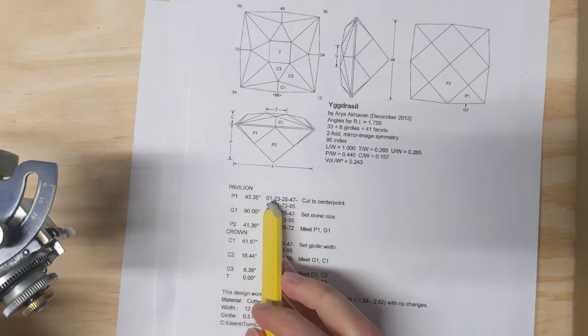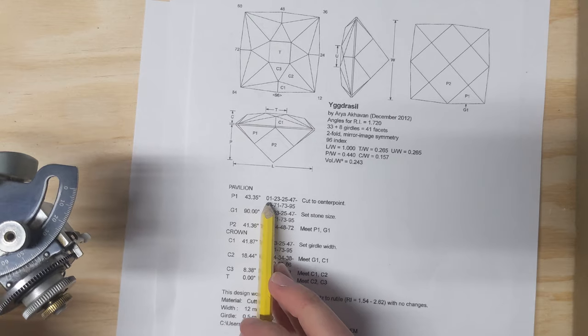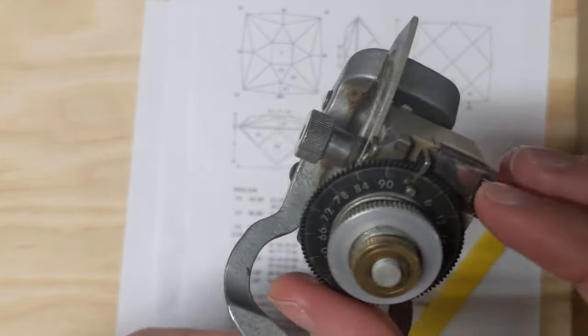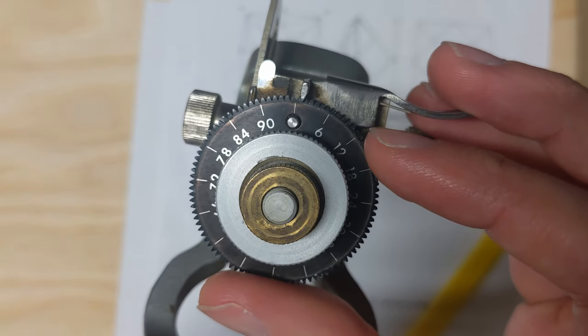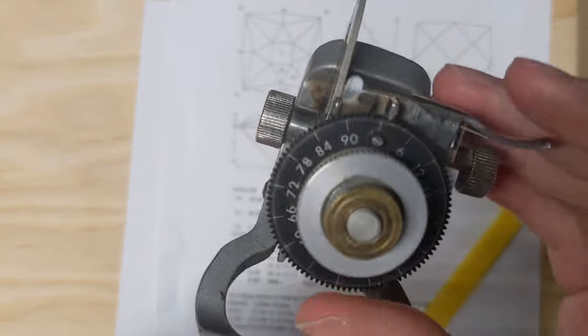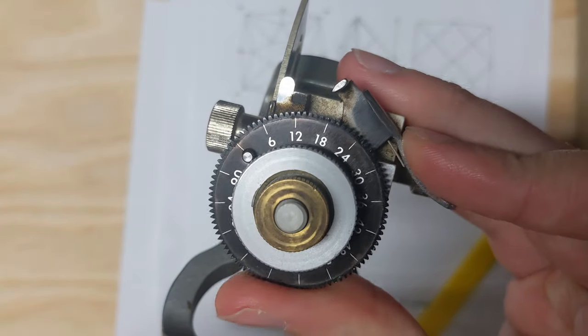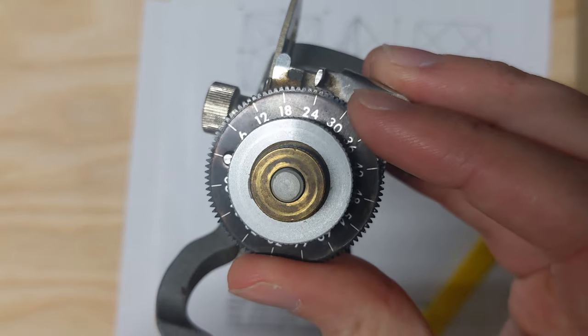Once you have your angle set, you run through the different indexes that it gives here for that angle. You start out with a 1, so you set this over one notch. That's one degree. Then you would cut in, and then go over to 23. 23 is right there, 24 is there.